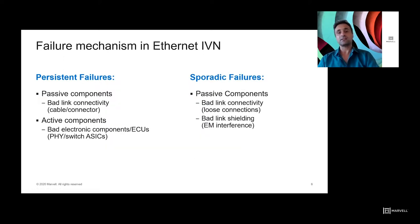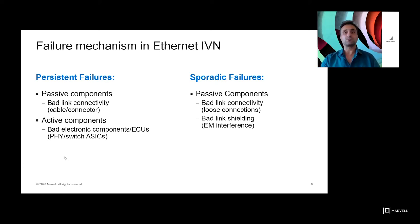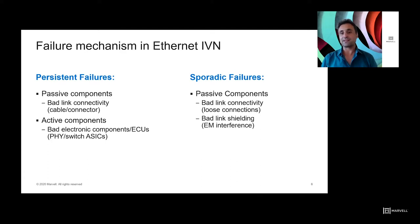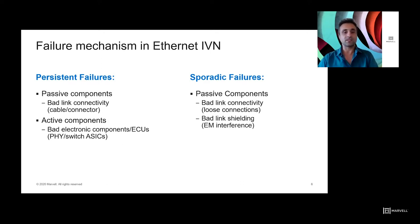The mechanisms behind these failures can be root-caused in different components, categorized into persistent and sporadic cases. Persistent ones are bad connectivity in passive components such as cables and connectors, or bad or failed electronic components like ECUs and switches. On the sporadic side, most are in passive components — bad links caused by loose connections affected by car movement and vibrations, or bad link shielding where the shield is not properly connected to ground, resulting in high electromagnetic wave exposure that causes sporadic errors.